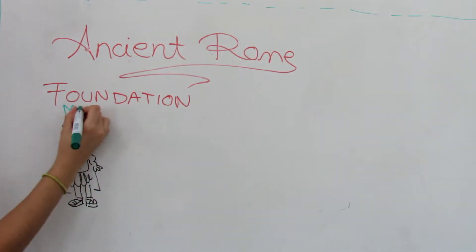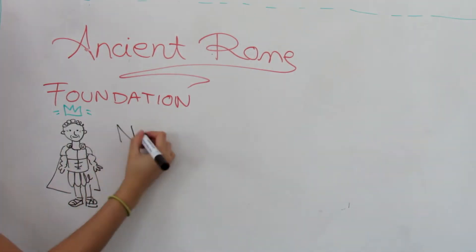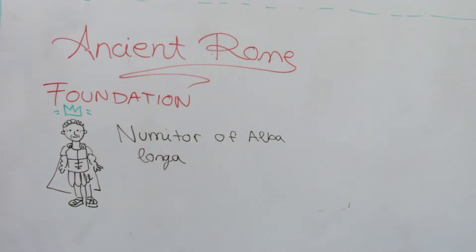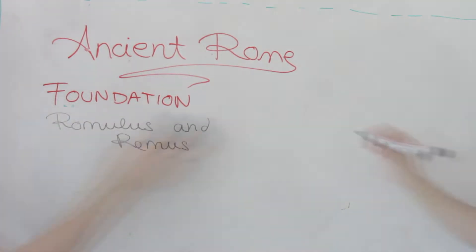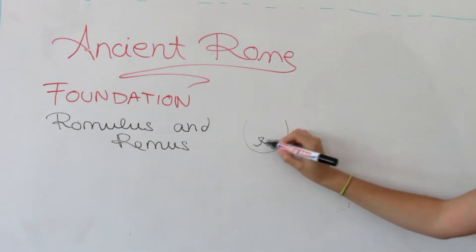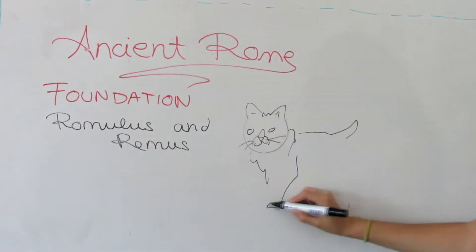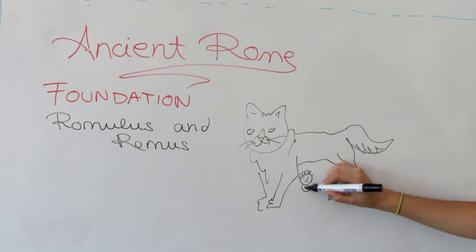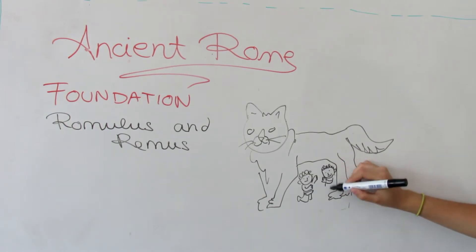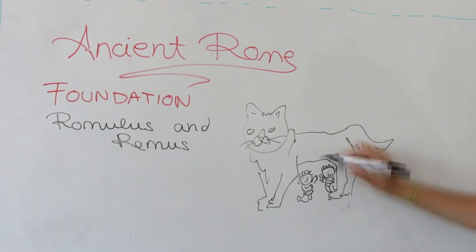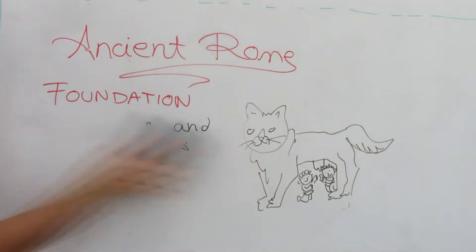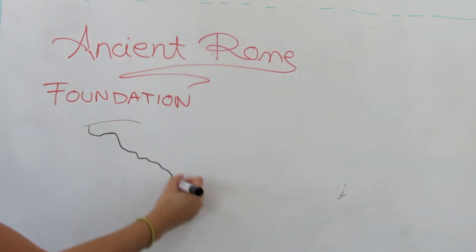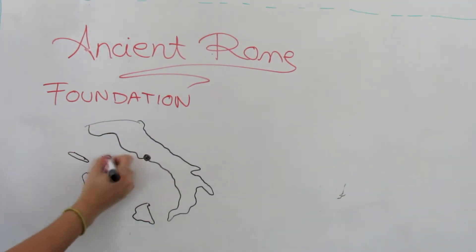Numitor, the king, was deposed from his throne by his brother Amulius, who feared that Romulus and Remus would take back the throne, so he ordered them to be drowned. A she-wolf shaped and raised them, and when they were old enough, they returned the throne of Alba Longa to Numitor. The twins then founded their own city.